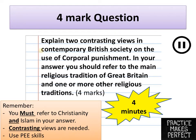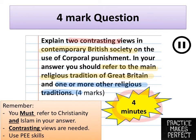Any arguments we can give are likely to be applicable here. The next thing to note is that it asks us to refer to the main religious tradition of Great Britain — this means we have to talk about Christianity. Then the fact that it says and one or more other religious traditions means we also have to talk about another religion — for us that's going to be Islam. The final thing to bear in mind is that it asks for two contrasting views, meaning we have to give views on both sides of the argument on corporal punishment. We're going to use PEE skills to do this, and you need to spend four minutes on the question. Pause the video now and time yourself for four minutes to answer the question.